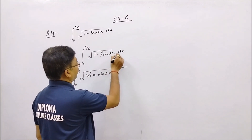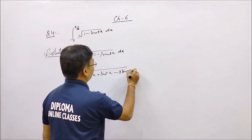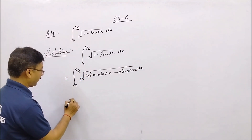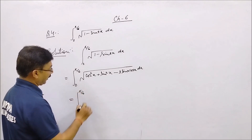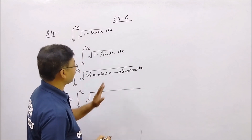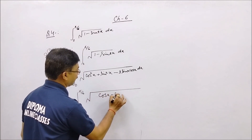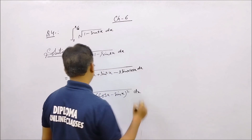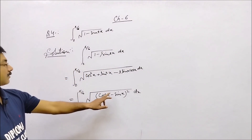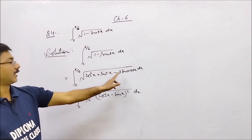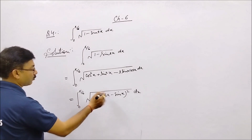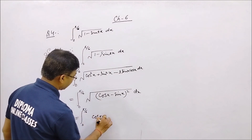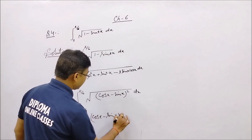We simplify: 1 minus sin 2x equals cos squared x plus sin squared x minus 2 sinx cosx, which equals (cosx minus sinx) whole square. So the integral becomes 0 to pi by 6 of under root (cosx minus sinx) whole square dx, which equals 0 to pi by 6 of (cosx minus sinx) dx.